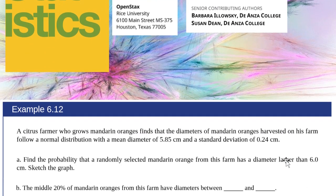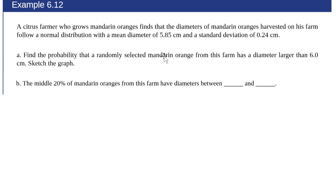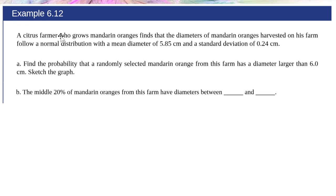Let's go and read our question. A citrus farmer who grows oranges finds the diameter of the oranges to follow a normal distribution, so if X is the diameter of the oranges, it follows a normal distribution with mean 5.85 and standard deviation 0.24 centimeters.